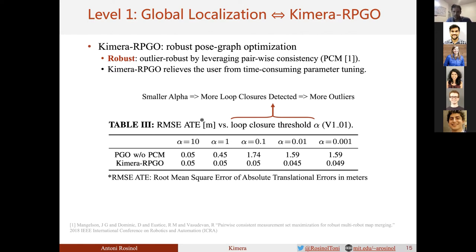This allows us to detect many loop closures with potential outliers without hurting performance. This table shows how our approach is insensitive to the alpha parameter, which controls how many loop closures are detected. While pose graph optimization without PCM quickly degrades in accuracy, ours remains insensitive to the parameter.